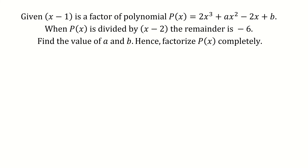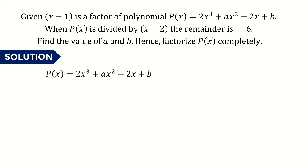Given that x minus 1 is a factor of polynomial p = 2x³ + ax² - 2x + b, and when p is divided by x minus 2 the remainder is negative 6, find the value of a and b, then factorize p completely. To solve this question, we take out the key information from the problem.